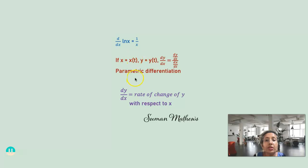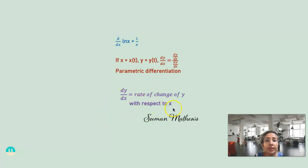Next, parametric differentiation. If x can be expressed as a function of t and y can be expressed as a function of t, then dy by dx equals [dy by dt] divided by [dx by dt]. If x is a function of z and y is a function of z, then dy by dx becomes [dy by dz] divided by [dx by dz]. Note that dy by dx is the rate of change of y with respect to x — this is an application of the derivatives formula.